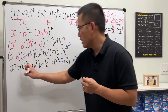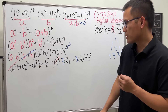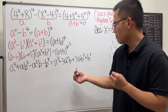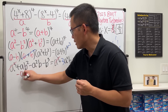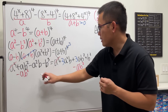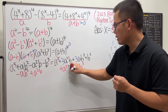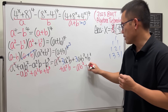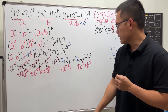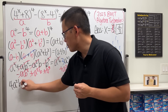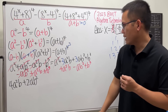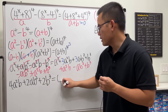Combining terms: the a cubed terms cancel. Moving everything to one side, we get negative a·b squared plus a squared·b plus b cubed equals 4a squared·b plus 2a·b squared plus 2b cubed, which simplifies to 0 equals 4a squared·b plus 2a·b squared plus 2b cubed.